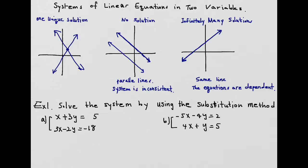Today we're going to go over systems of linear equations in two variables. When we're solving linear equations, we end up getting a line — one line for each equation. When you say two variables and system, system means you have more than one linear equation you're trying to solve. So if we have two linear equations, you will have two lines, and in that case we have three different types of solutions.